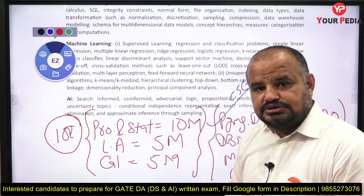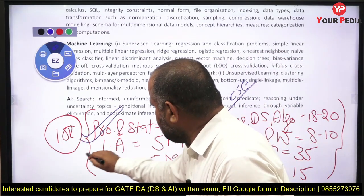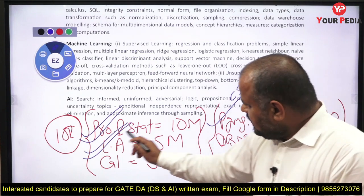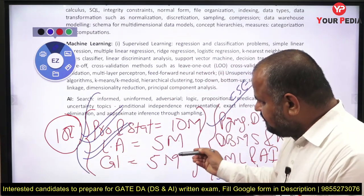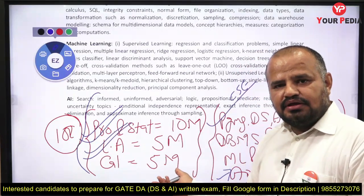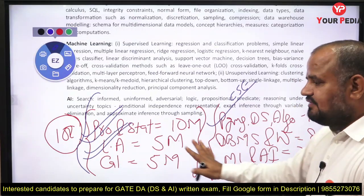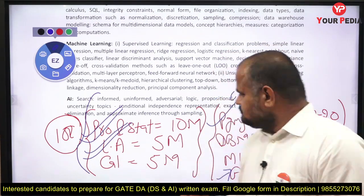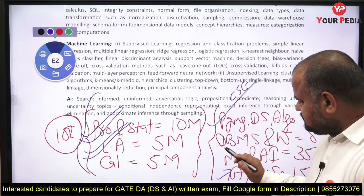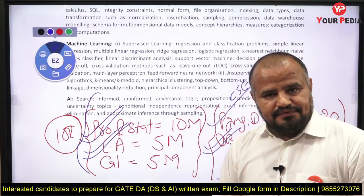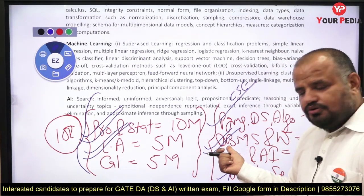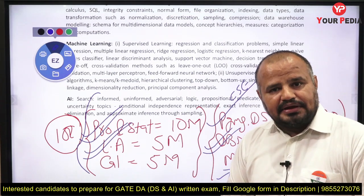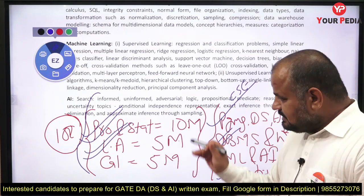For non-CSC background students, start with probability and linear algebra. You can also score from aptitude and English — that's 15 marks. Covering probability, linear algebra, and calculus — roughly 10, 5, and 5 marks — should take around 30 to 40 hours, giving you 20 plus 15, that is 35 marks, which can help you qualify the GATE paper. After completing those, you can move to DBMS, which is relatively easier and can fetch another 8 to 10 marks.